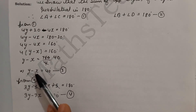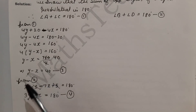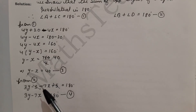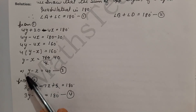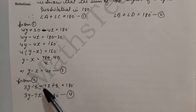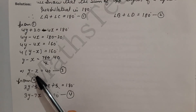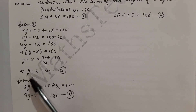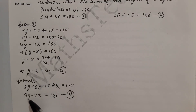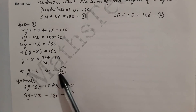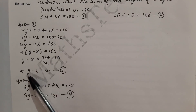Now we will solve equations 3 and 4. I am using the elimination method. We want to eliminate y. In equation 4, the coefficient of y is 3, so we will make the coefficient of y in equation 3 also equal to 3 by multiplying both sides of equation 3 by 3.